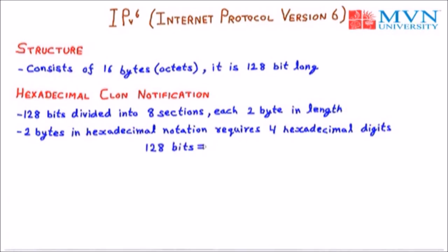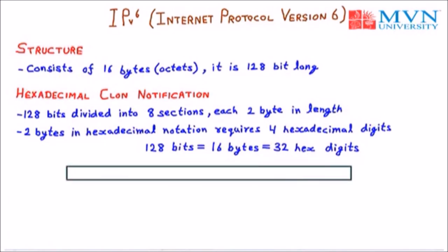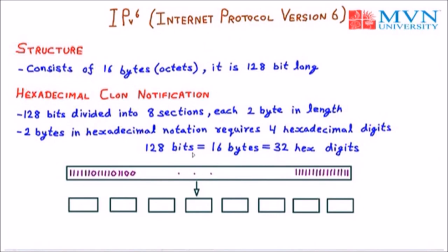128 bits is equal to 16 bytes. Since we have blocks of 2 bytes, we require 32 hexadecimal digits in colon notation. Suppose we have 8 blocks of the IPv6 address, each starting with 2 bytes. 8 multiplied by 2 gives 16 bytes. So the first block is of 16 bits. This is the first block and the last block is all ones. Now we are going to represent the binary form in hexadecimal form.